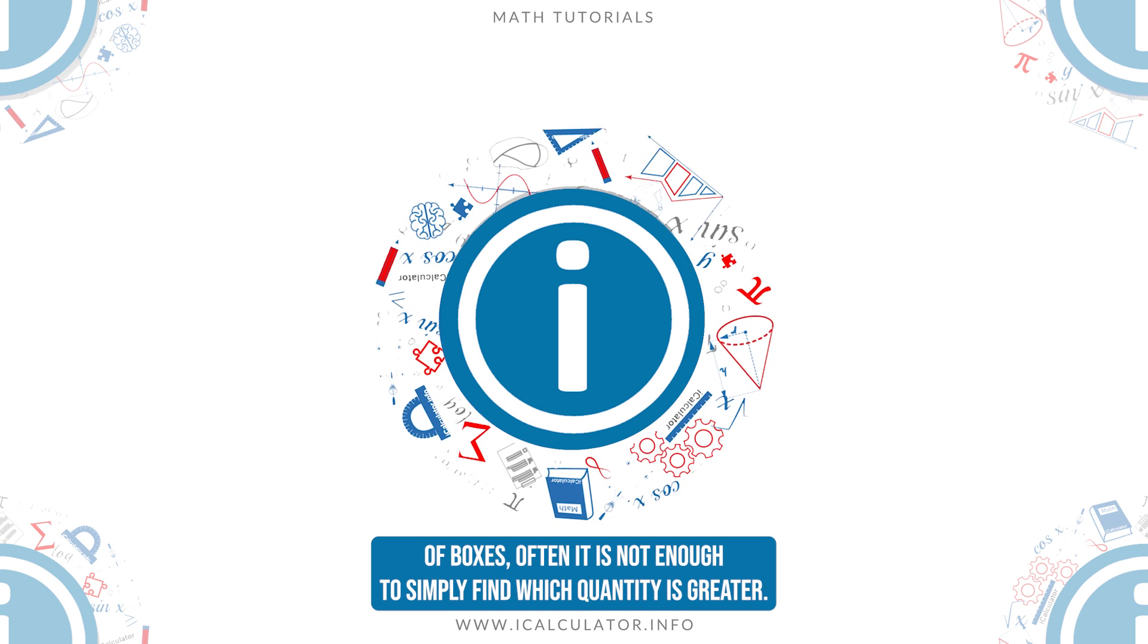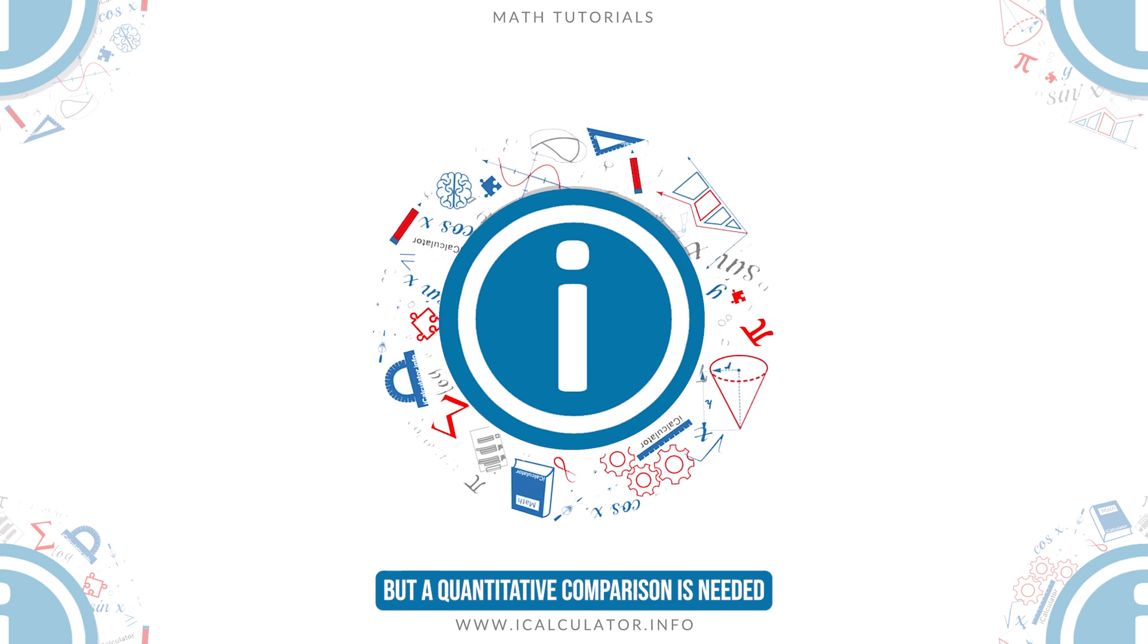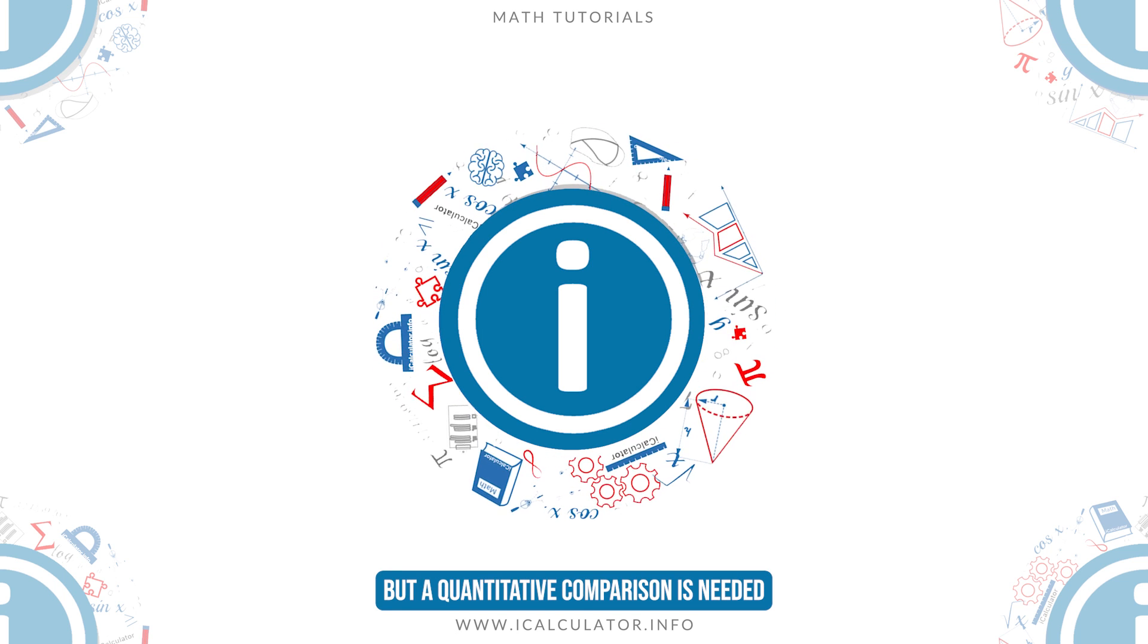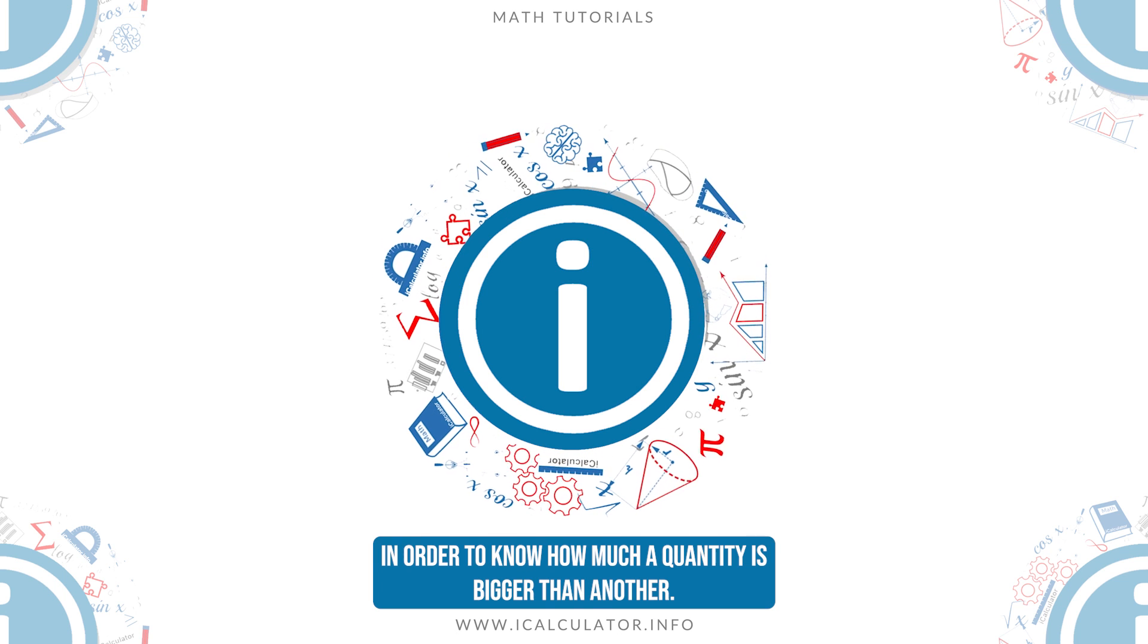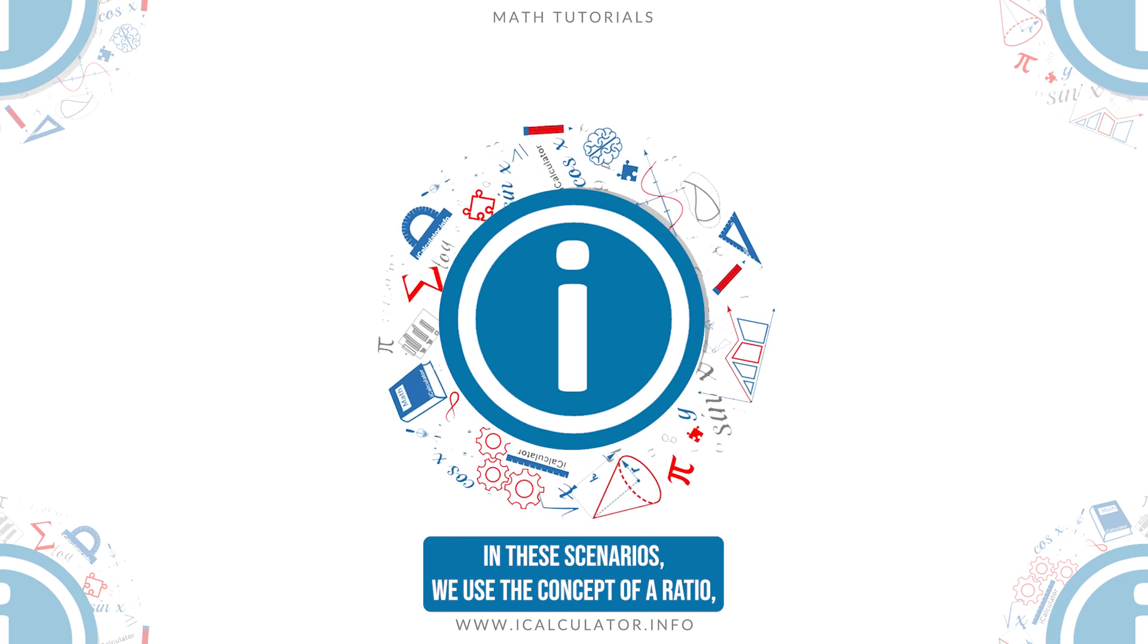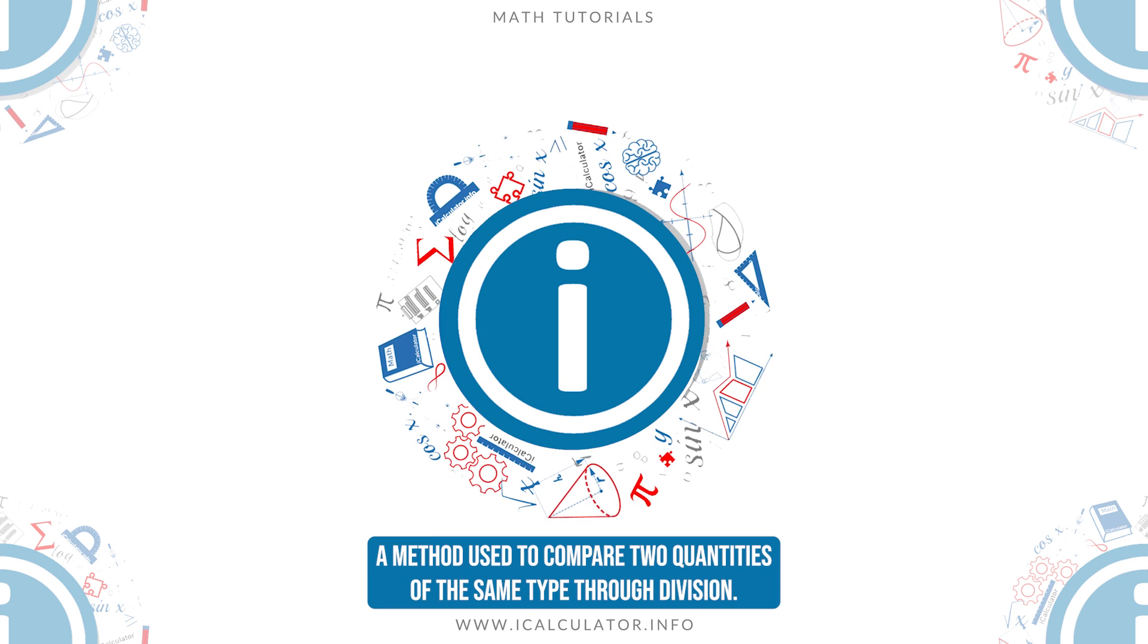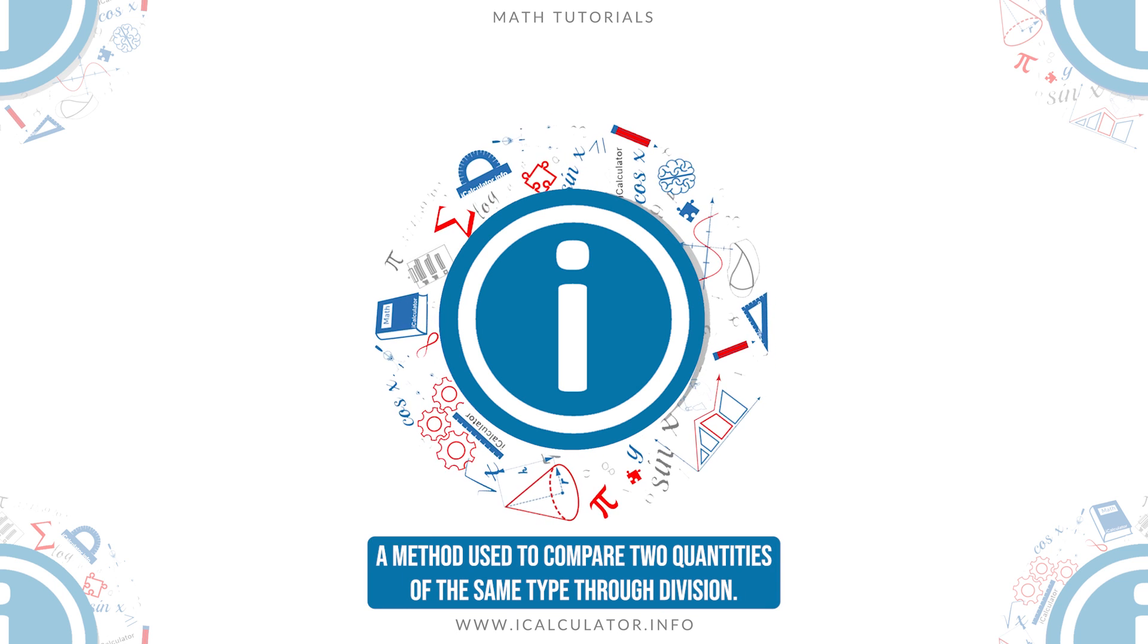Often, it is not enough to simply find which quantity is greater, but a quantitative comparison is needed, in order to know how much a quantity is bigger than another. In these scenarios, we use the concept of a ratio, a method used to compare two quantities of the same type through division.